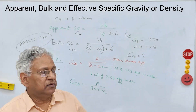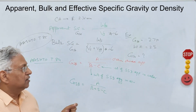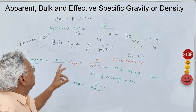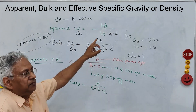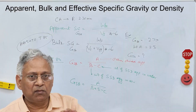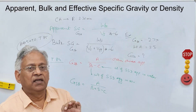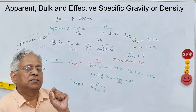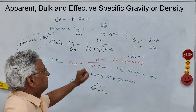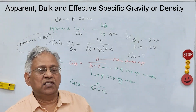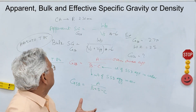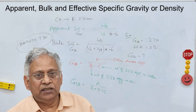Determination of bulk specific gravity of filler is difficult, but you can use apparent specific gravity for two reasons: first, the amount of filler in a bituminous mix is very small; and second, there is very small variation between the apparent and bulk specific gravity of filler. So AASHTO suggests that for filler, apparent specific gravity can be used, which is easy to determine.